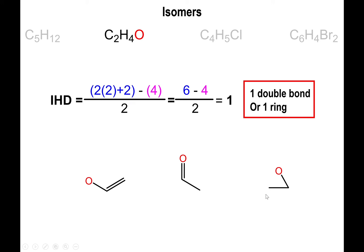The last option is to connect all three atoms together to form a ring, giving another molecule with the same IHD. Make sure any oxygen that doesn't have two bonds gets an extra hydrogen. Checking the hydrogen counts: the first structure has 1+1+2 = 4 hydrogens; the second has 1+3 = 4; the third has 2+2 = 4. That's the beauty of the index of hydrogen deficiency.